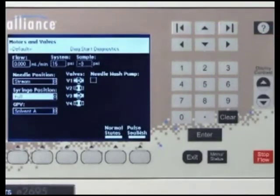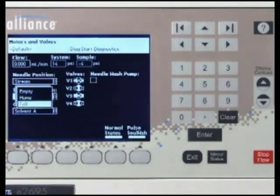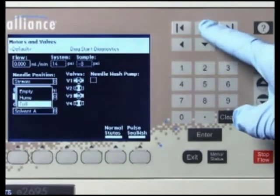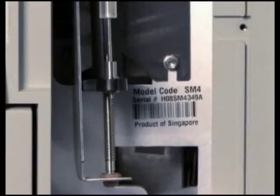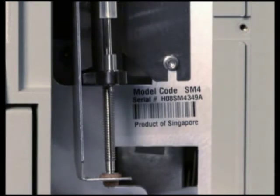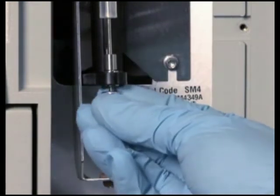In the syringe position field, press enter to display the drop-down list. Select empty and then press enter. The mounting bracket moves upward so that you can install the knurled nut. Fasten the knurled nut.